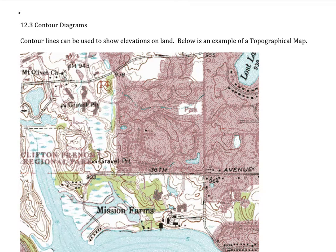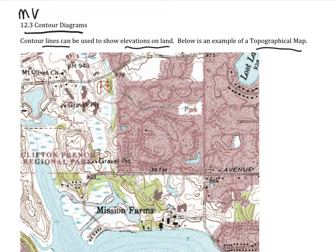Hi, this is multivariable 12.3. We're going to look at contour diagrams. Contour lines can be used to show elevations on land and in the water too. This is an example of a topographical map.